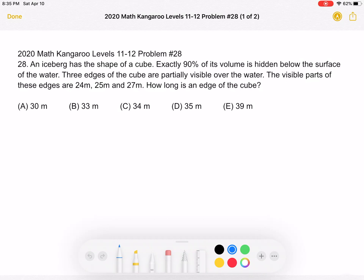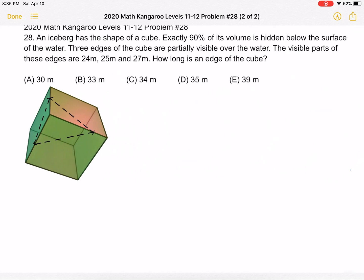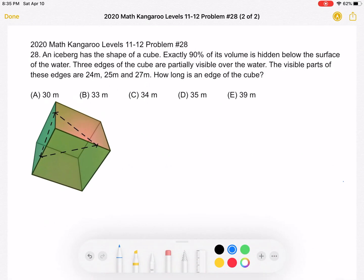This is the problem as it originally appeared on the test, and here is where we'll be doing the solution. So as you can see, I started by including a picture of a cube to represent our iceberg. The iceberg is submerged in water, and three edges are partially visible.